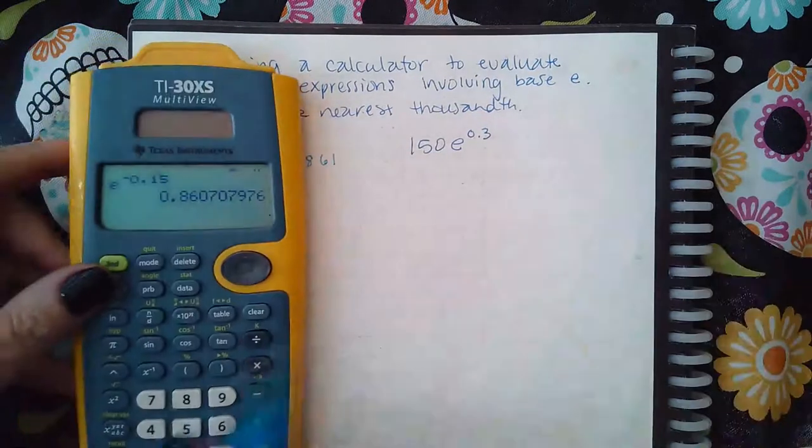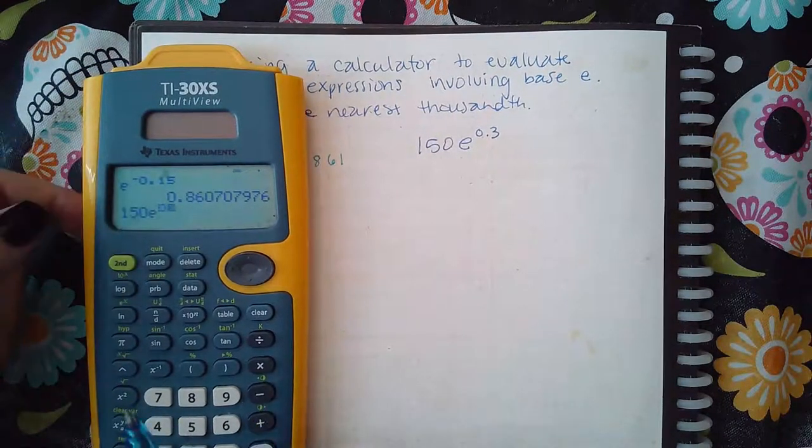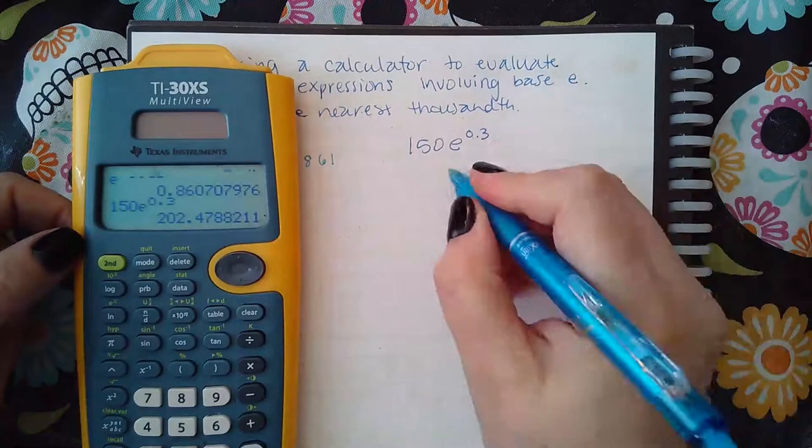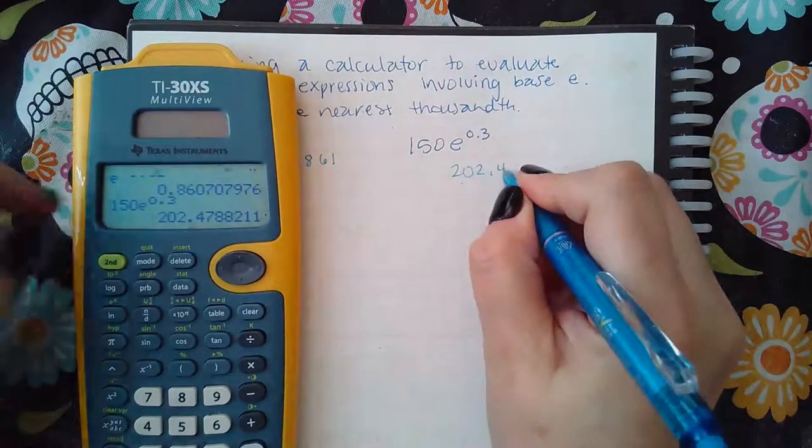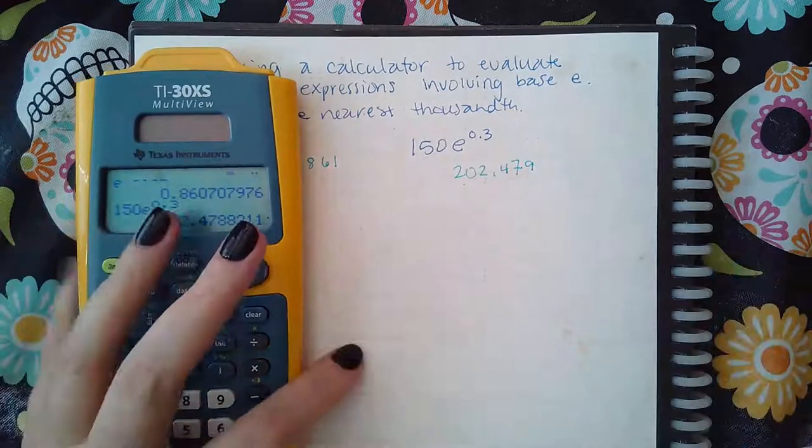Then now here, I type 150, and then second E, and it already opens the exponent, and so then it's 202.479, and that's pretty much all for this.